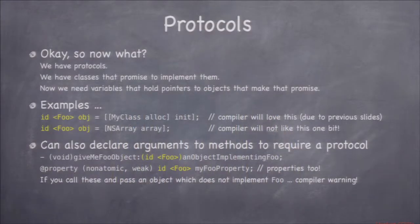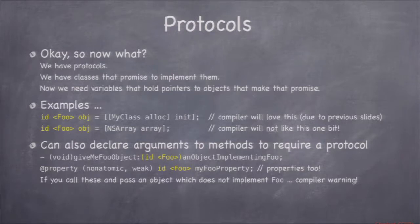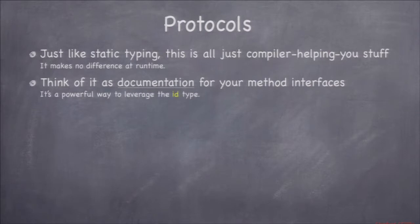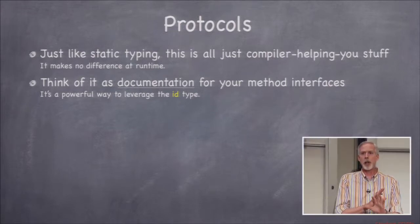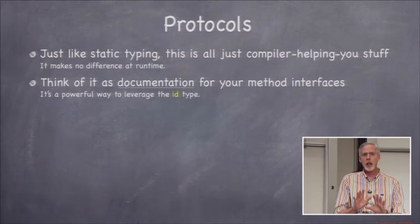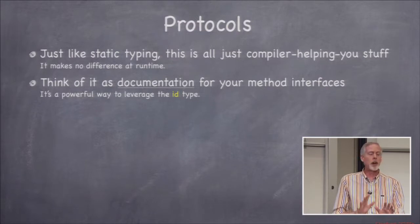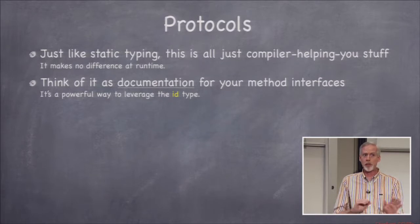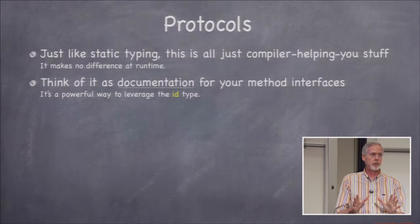You can also pass these protocol-qualified IDs around as arguments to methods and as properties — it's really just another type. It's not quite NSString star where you know exactly the class, and not quite a bare ID where you know nothing. It's in between: you know some of the methods. This is all just syntactic sugar in the compiler — no code is generated any differently because of protocols. The compiler can simply warn you, which is the only difference.